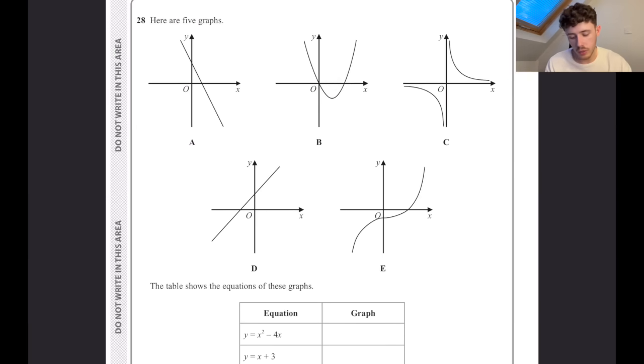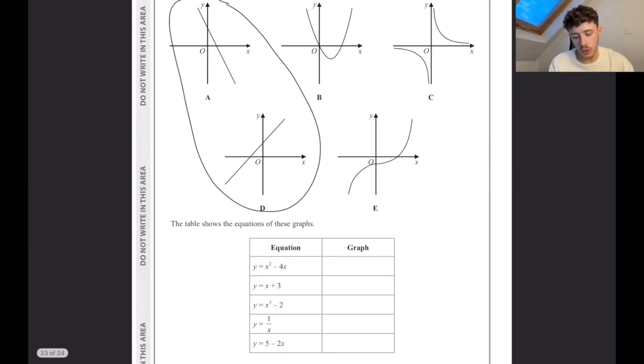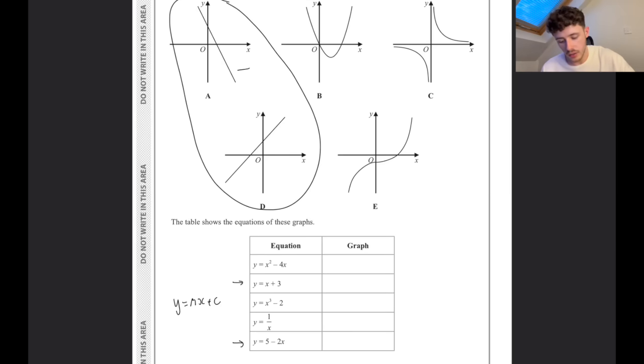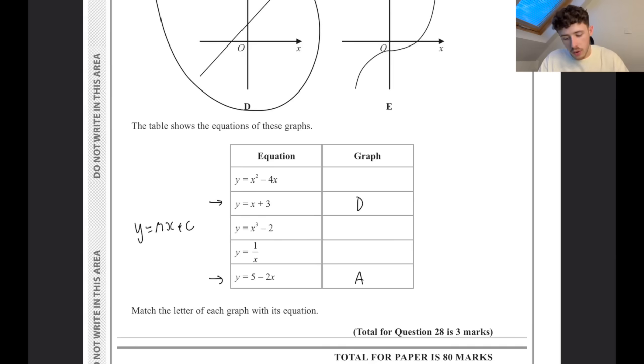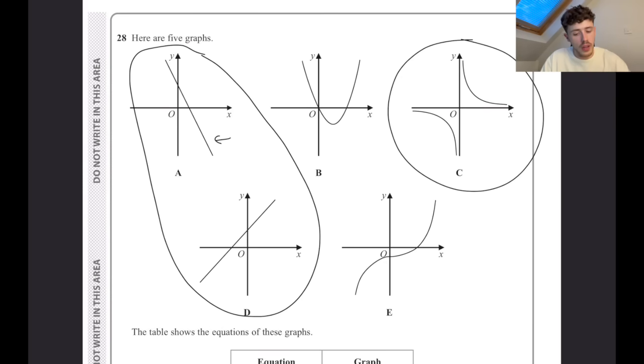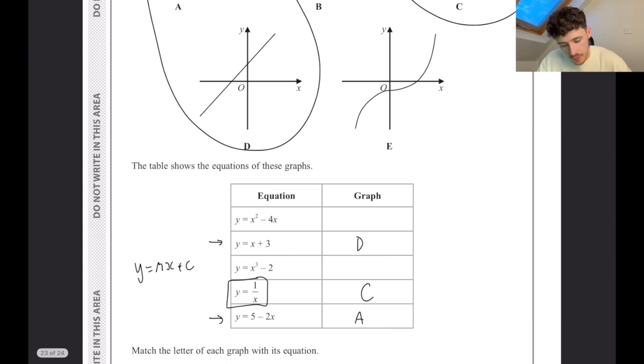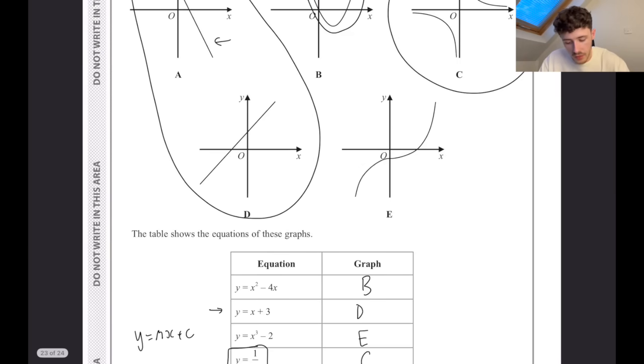Here are five graphs. The tables show the equations of these graphs - match the letter. First, let's look at the straight line graphs. These two are both straight lines, A and D. In here, you want to look for the equations that only have a single power of x. Notice how this one has a negative gradient - the m value here is minus two. This has a negative gradient, so that's going to be A, meaning this one must be D because that has a positive gradient. The one over x graph is C - that's what they look like. The x cubed graph makes a funny kind of S shape, that is going to be E. And that leaves our quadratic graph to be B, which is that famous U shape that you should be familiar with. That's when we have an x squared involved.